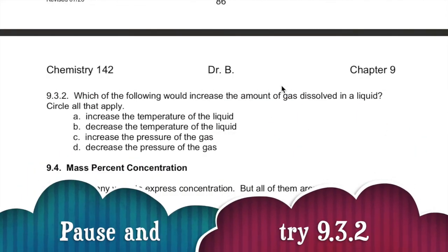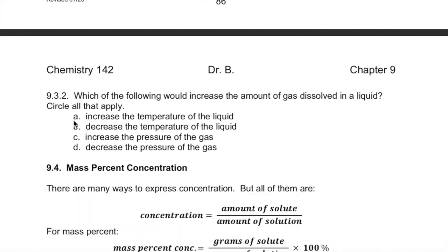Here's a quick review: which of the following would increase the amount of gas dissolved in a liquid? Remember that gases dissolve better in cooler liquids — heating up a liquid will make less gas dissolve, though it makes more solid dissolve. To increase the amount of gas dissolved, you would need to decrease the temperature. As far as pressure goes, high pressures of gas are when the gas is most soluble; when the pressure is low, the gas can escape. So you want a high pressure of gas over the liquid to make it dissolve better.